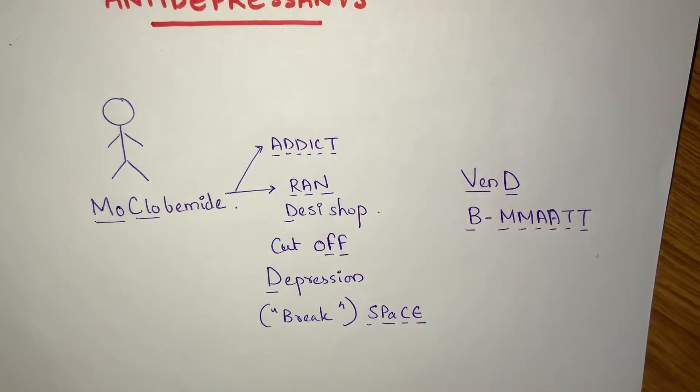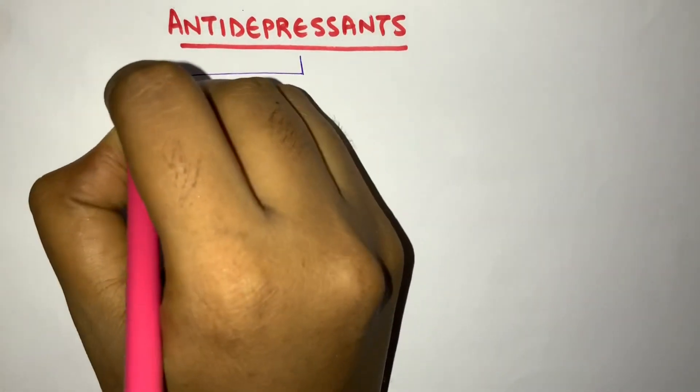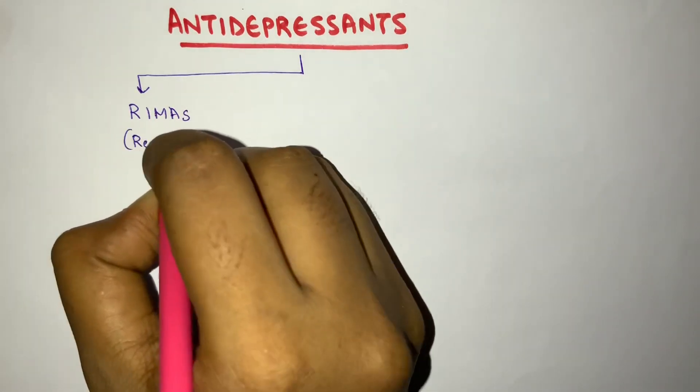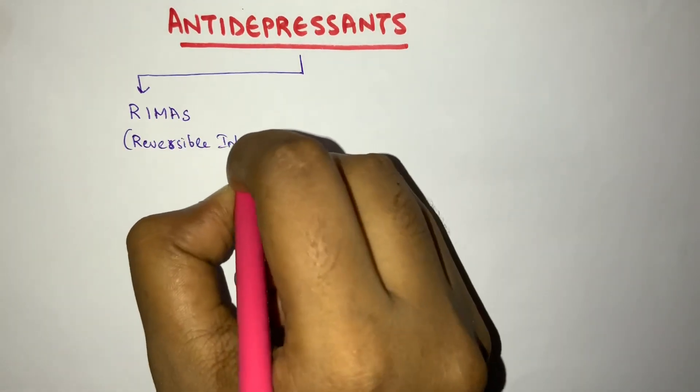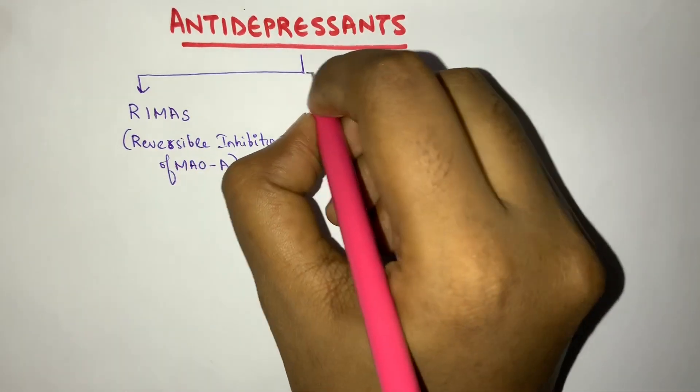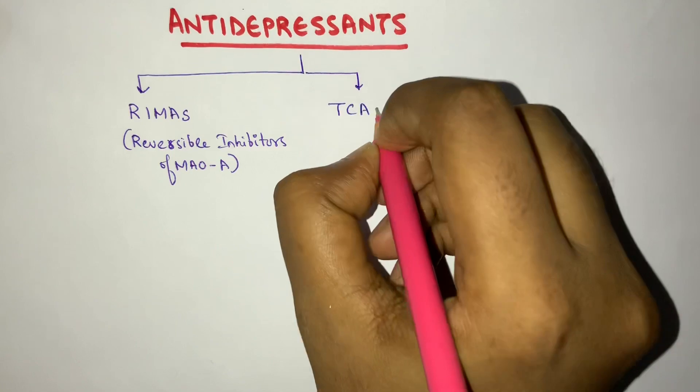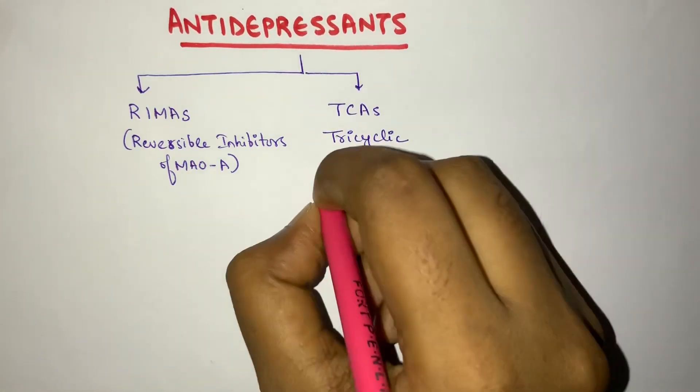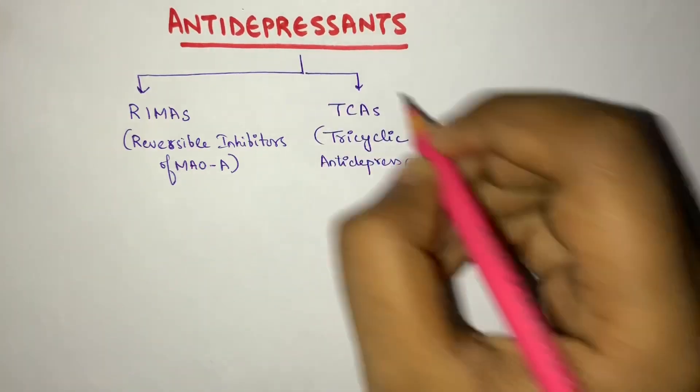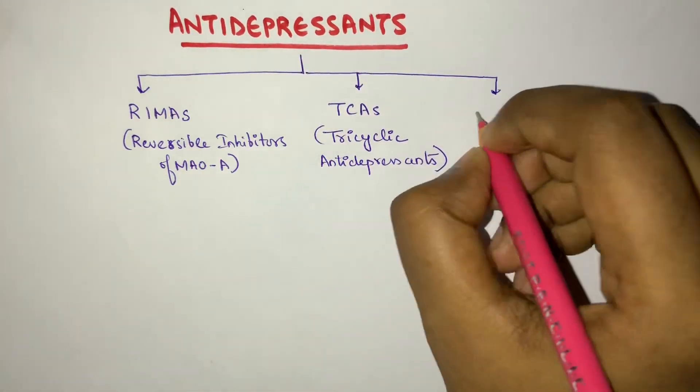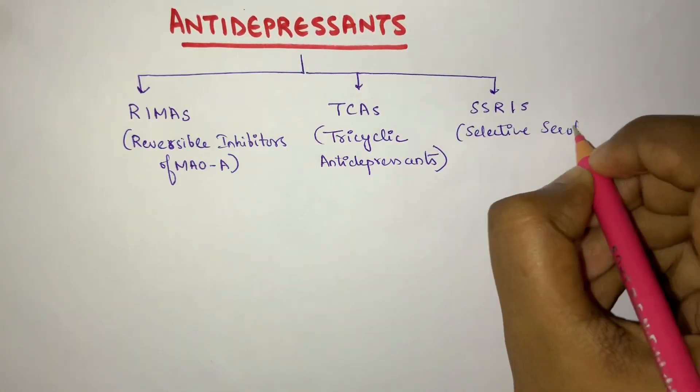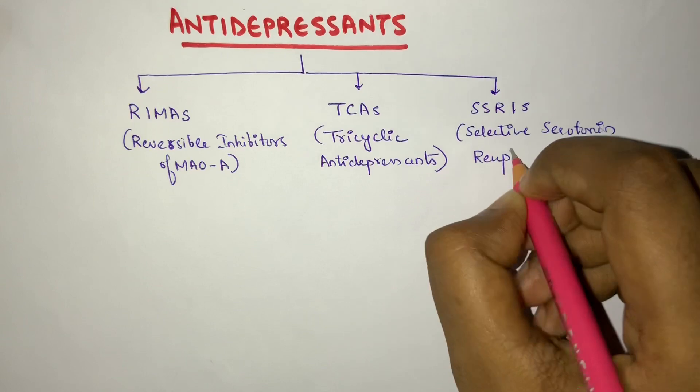Now onto the classification of the antidepressants. First one is RIMAs, that is reversible inhibitors of the enzyme MAO-A. The next one is TCAs, that is the tricyclic antidepressants. The next one is SSRIs, that is selective serotonin reuptake inhibitors.